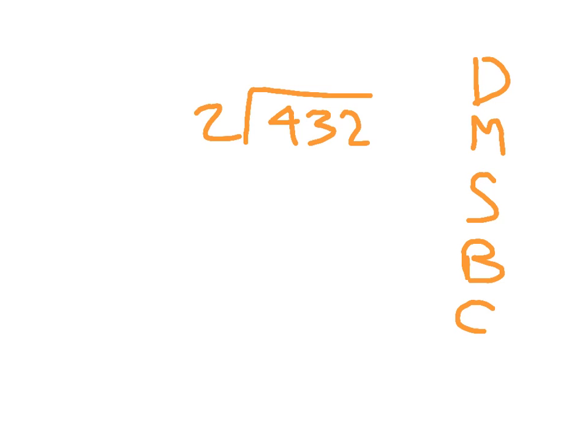We'll start in the hundreds place, and we have four hundreds divided by two, which equals two hundreds, and that's why we place the two right there within our answer. Two times two is four, and four minus four is zero.